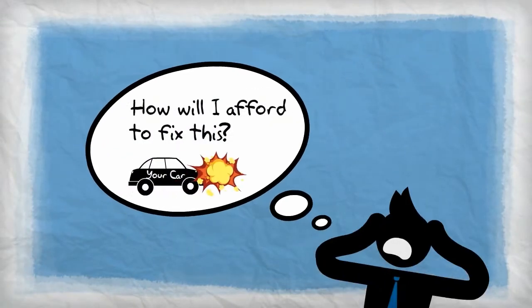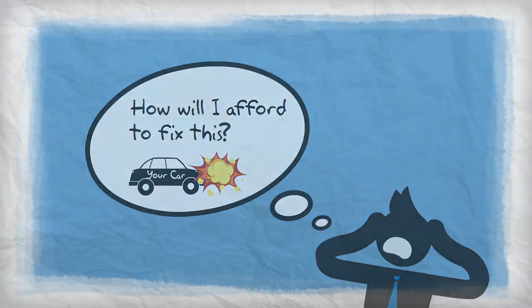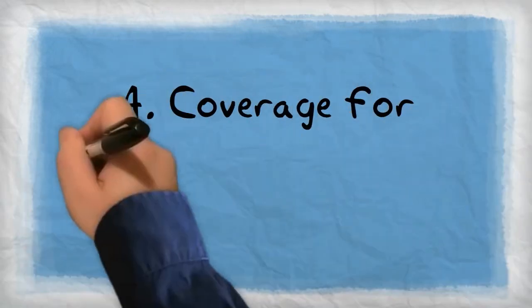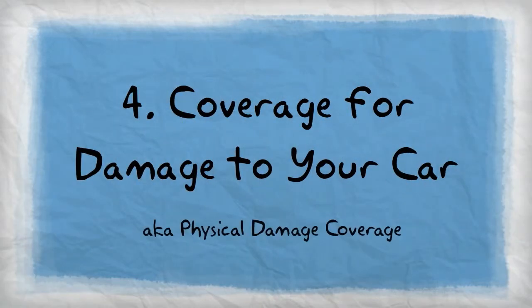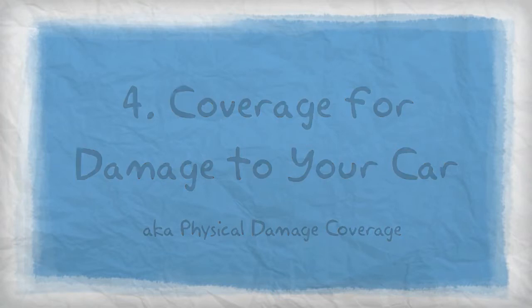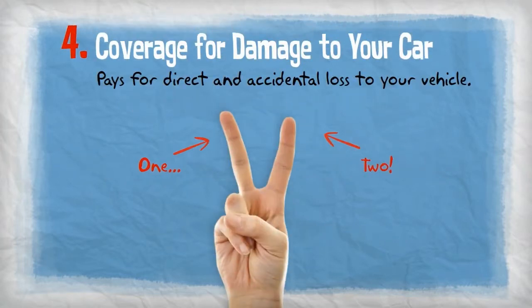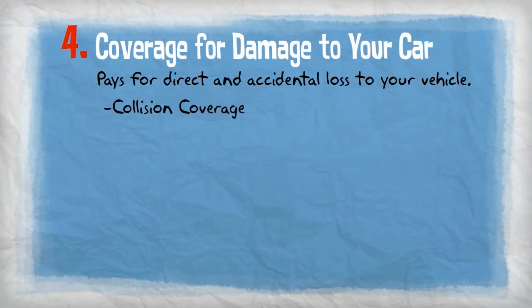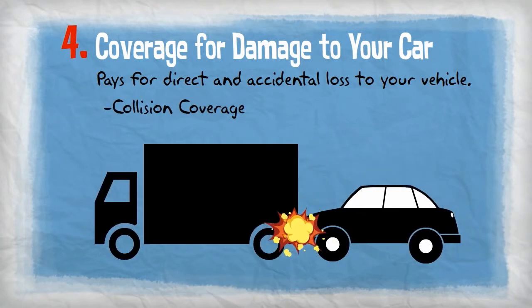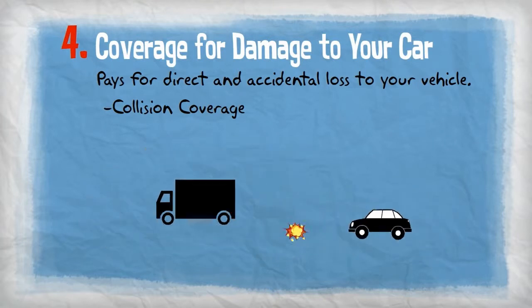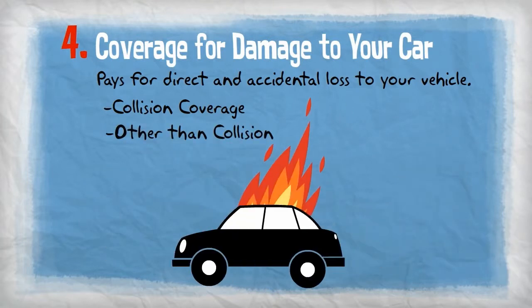By now, you may be wondering how you're going to pay for damages to your own car. That's where the fourth and final part of your auto policy comes into play: coverage for damage to your car, also known as physical damage coverage. It pays for direct and accidental loss to your vehicle. There are two parts to physical damage coverage — collision, for when your car impacts another vehicle or object or is upset, and other than collision, which covers almost any other type of direct accidental loss not excluded by your policy.